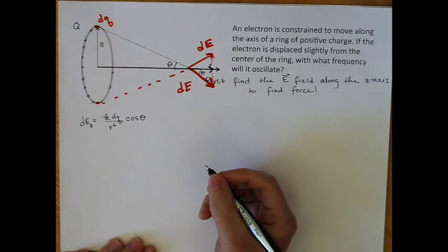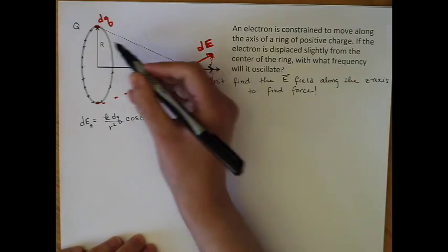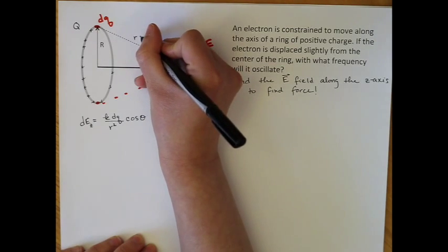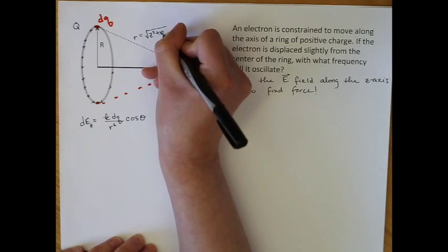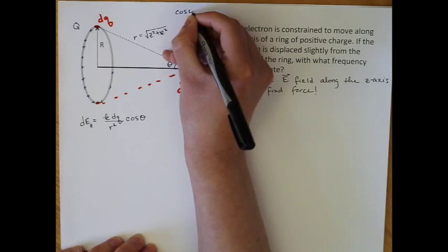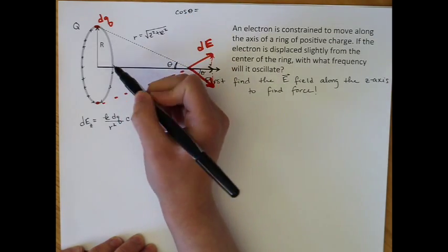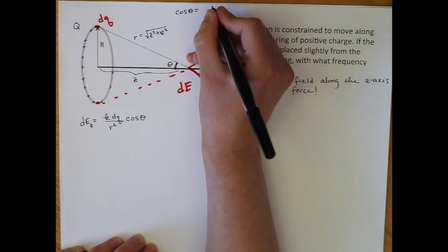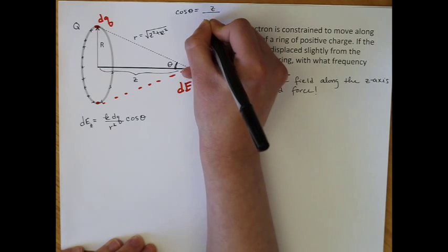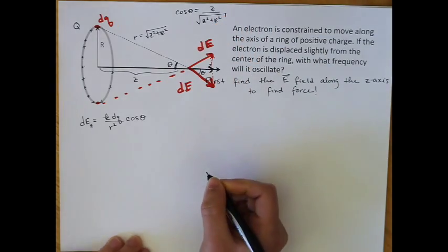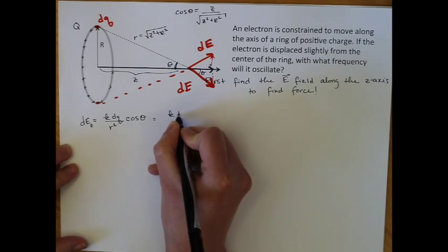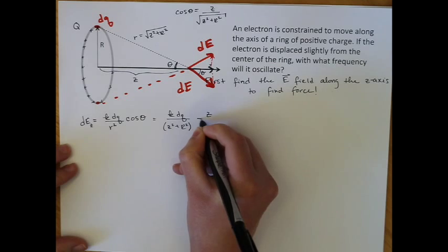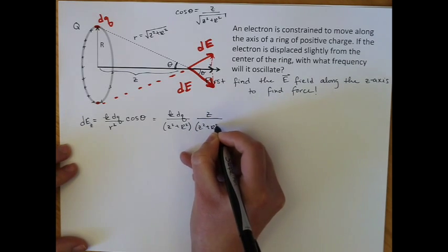And we're going to have to do that the whole way around the ring. So can we get cosine theta in terms of other variables? So little r is equal to the square root of z squared plus R squared. And that means the cosine of theta is adjacent over hypotenuse. So the adjacent length is z and the hypotenuse is little r. So this will be z over the square root of z squared plus R squared.